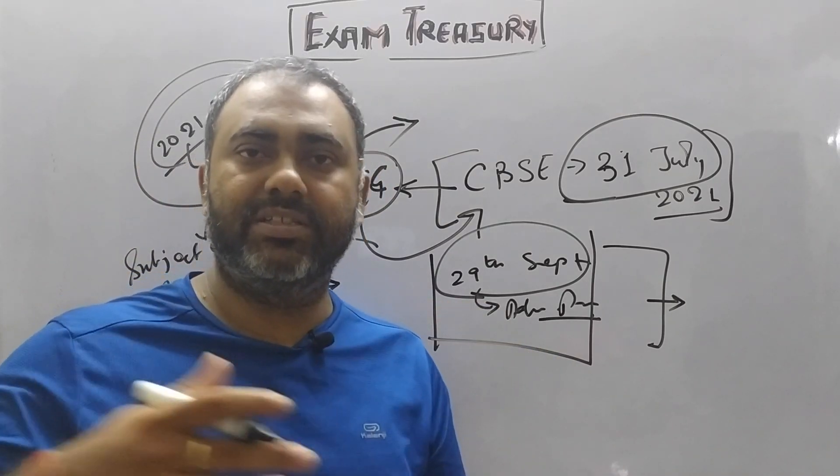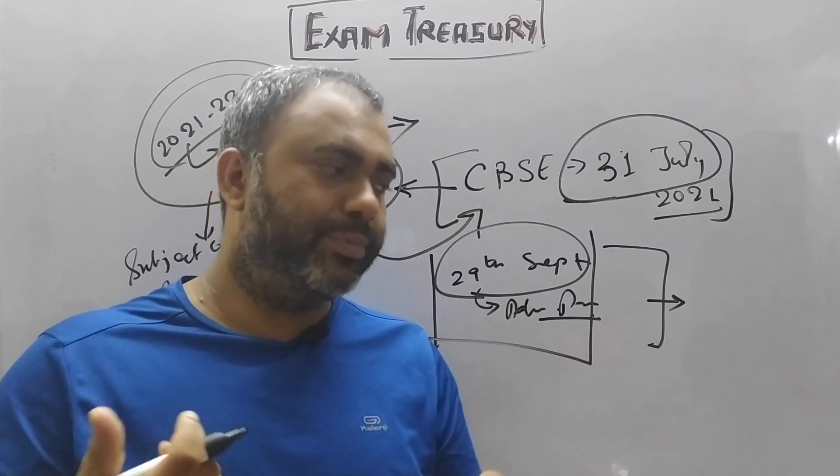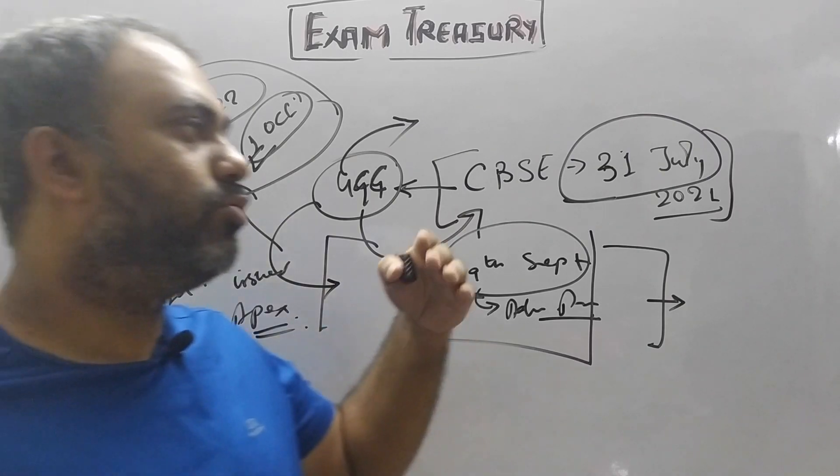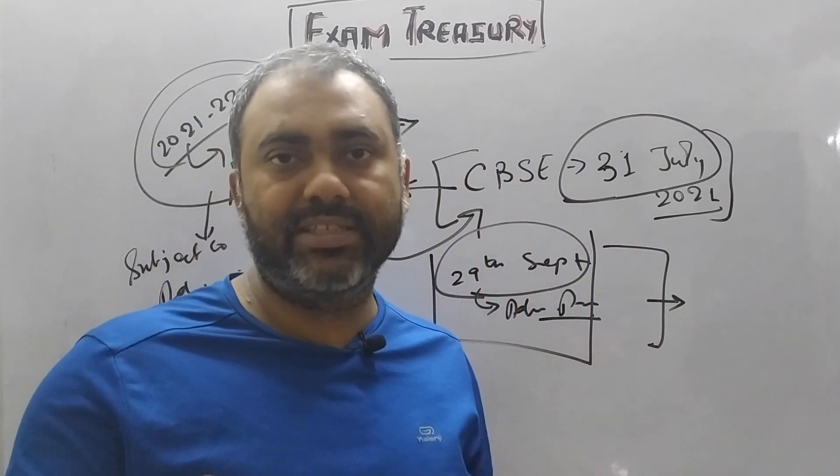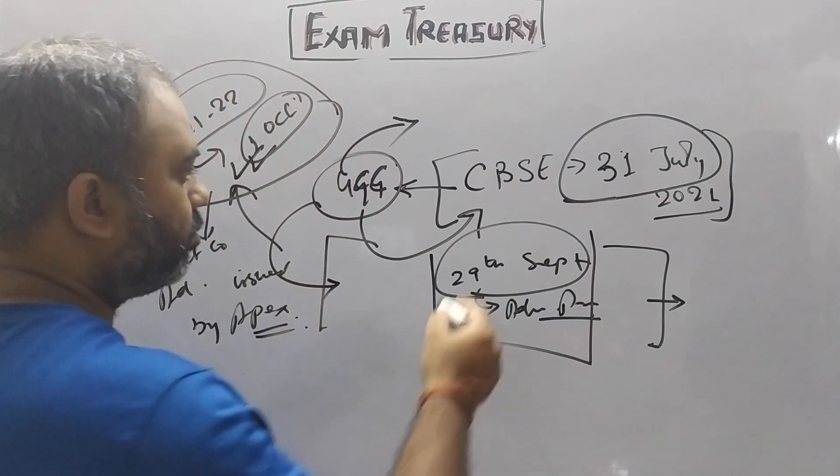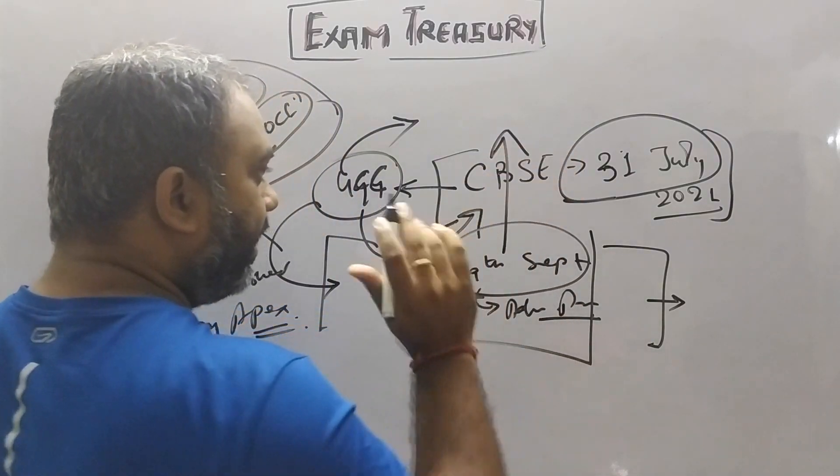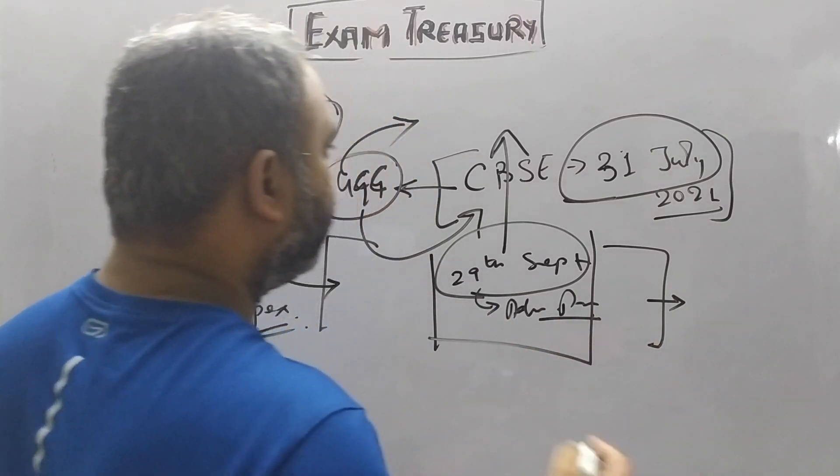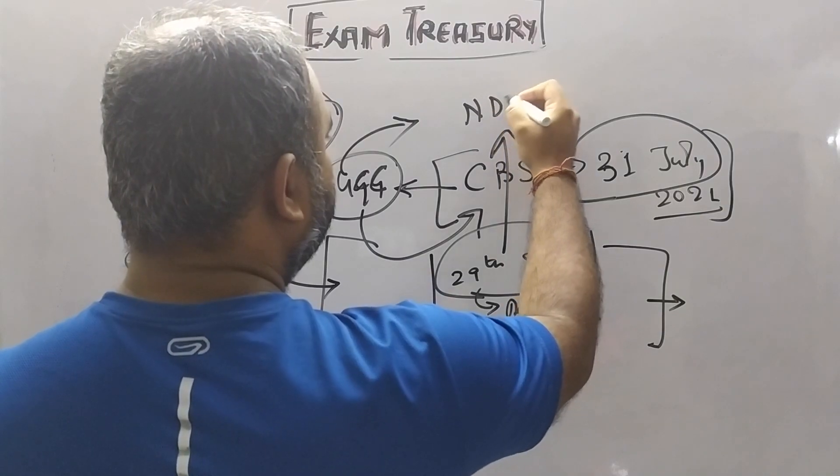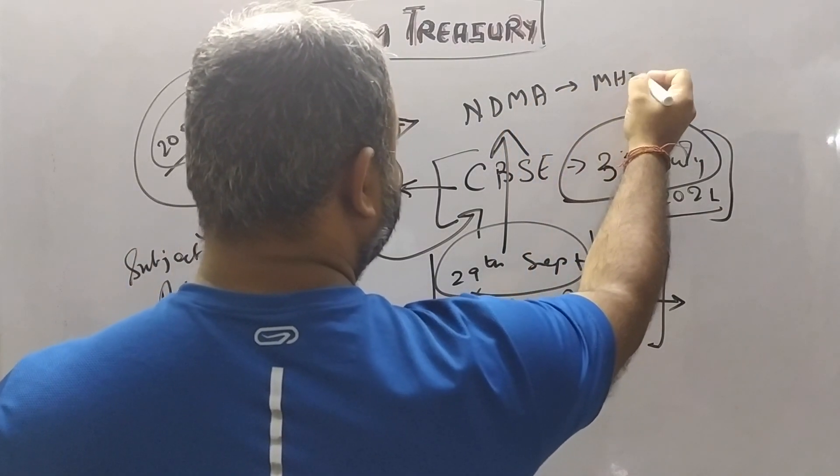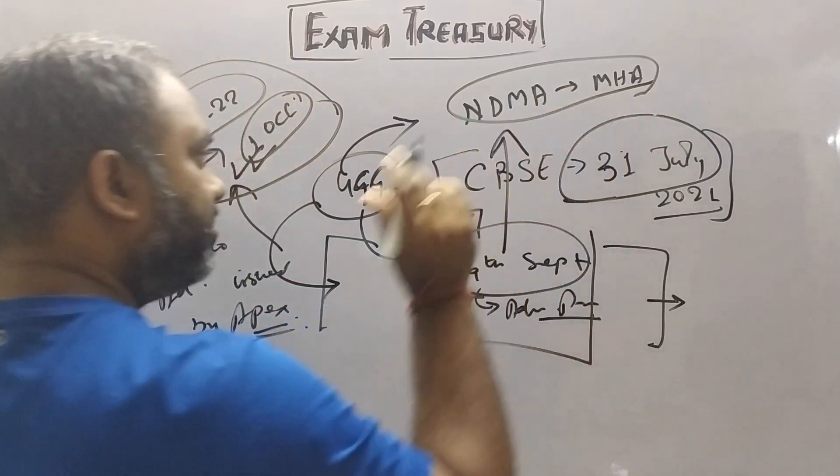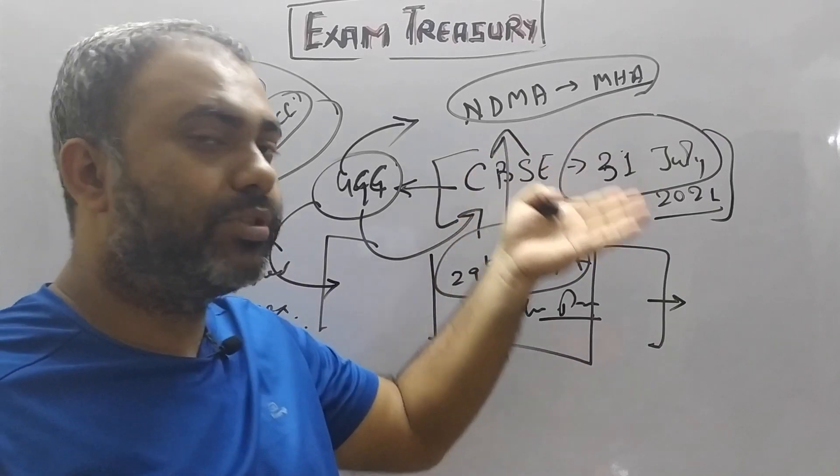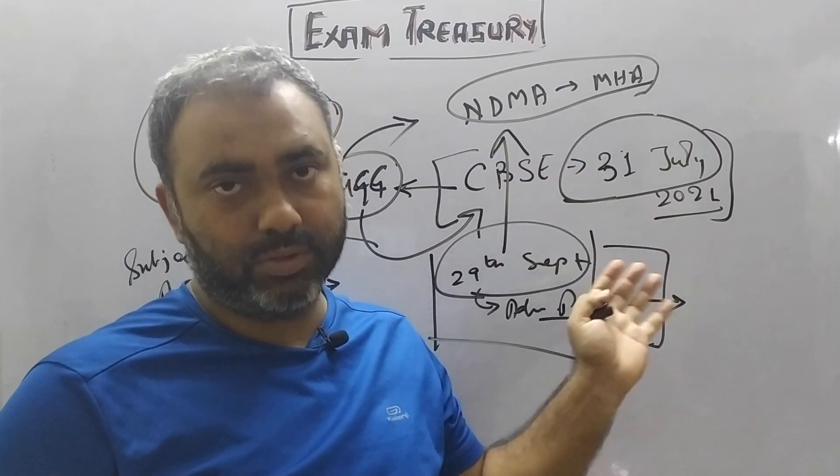Whether you do online mode, offline mode, or mixed mode, you have to keep this in attention: the APEX authorities - as you know, because the pandemic has been declared a disaster, the National Disaster Management Authority (NDMA) which is under the MHA - these are the APEX authorities which decide when the academic process, colleges, or universities will open.